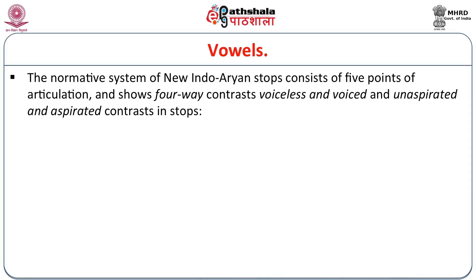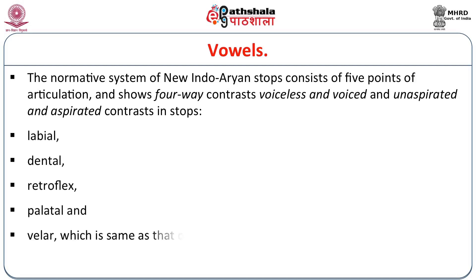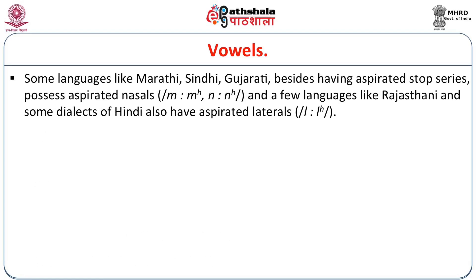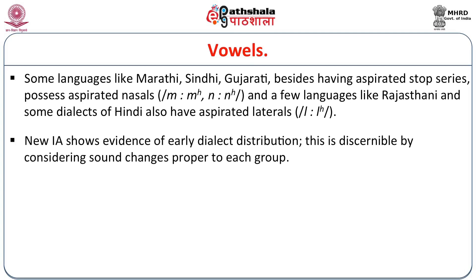The geographical position of these languages doubtless contributed to these losses. Sinhalese coexists with Tamil, Assamese is surrounded by Tibeto-Burman languages, and Kashmiri is on the border of the Iranian area. The normative system of New Indo-Aryan stops consists of five points of articulation and shows four-way contrasts — voiceless and voiced, and unaspirated versus aspirated — in stops: labial, dental, retroflex, palatal, and velar, which is the same as Sanskrit. Some languages like Marathi, Sindhi, Gujarati also possess aspirated nasals, and a few languages like Rajasthani and some dialects of Hindi also have aspirated laterals.